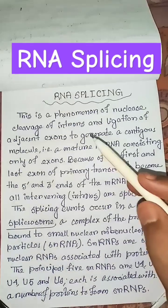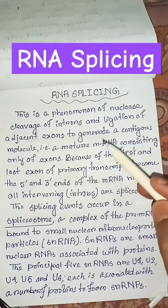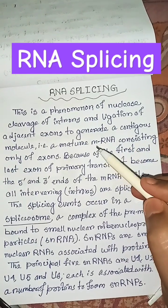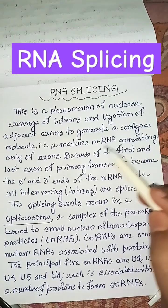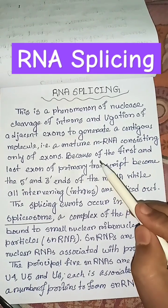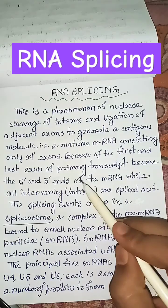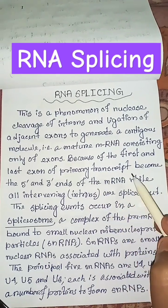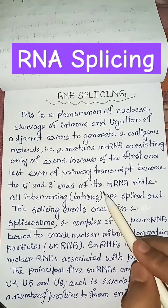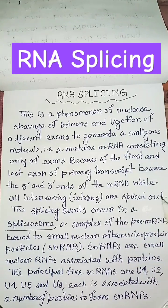RNA splicing is a phenomenon of nucleus cleavage of introns and ligation of adjacent exons to generate a contiguous molecule that is a mature mRNA consisting only of exons. The first and last exon of the primary transcript become the 5 prime and 3 prime ends of the mRNA, while all intervening introns are spliced out.